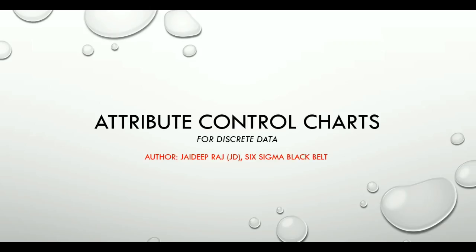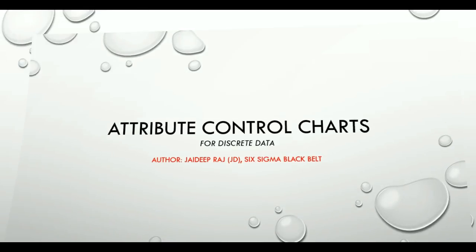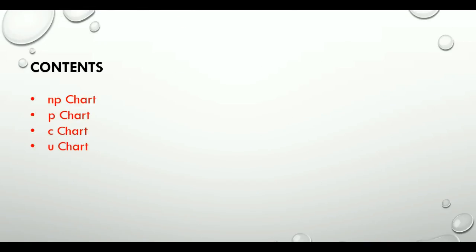Hello everyone. Welcome to this video on attribute control charts — these are control charts for discrete data. This is in continuation to video 1.8, which was an introduction to control charts. Today we will look at four different types of attribute control charts: NP, P, C, and U chart.